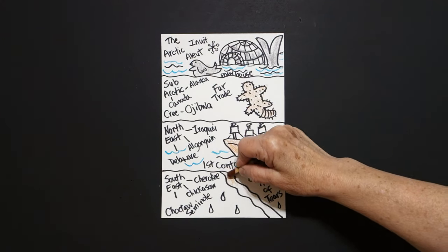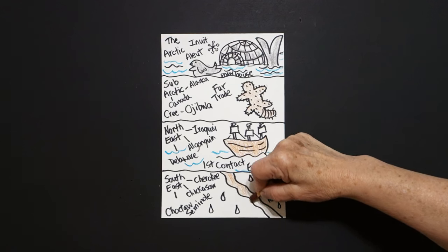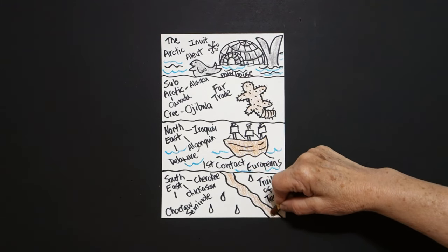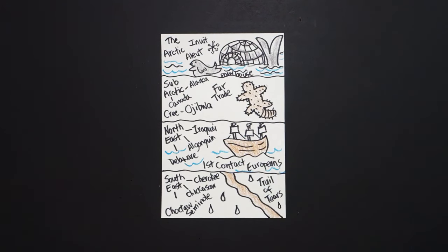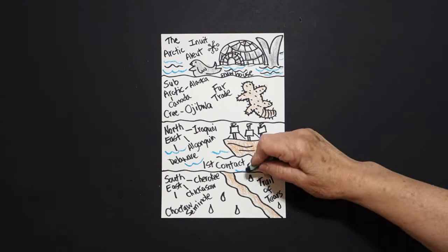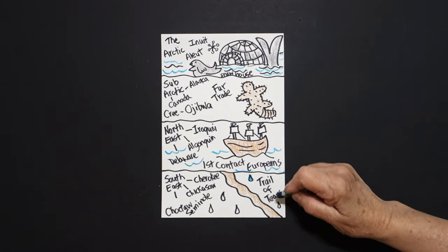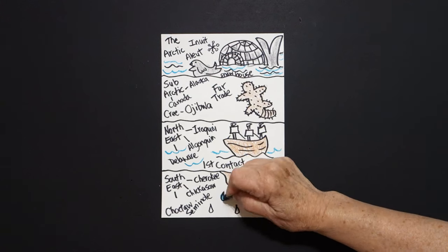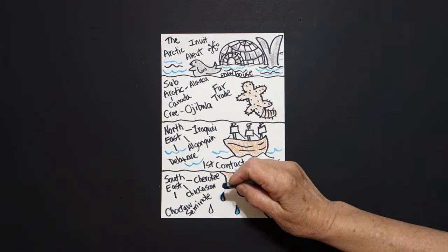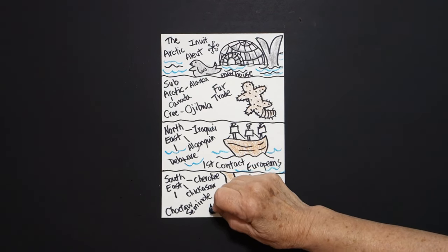Then I come down to my Trail of Tears and again I'm just going to color in my brown. And this is important because this was really the first instance where the United States government took the Native Americans, displaced them off of their home tribal lands. And it was the Trail of Tears because a lot of people died.